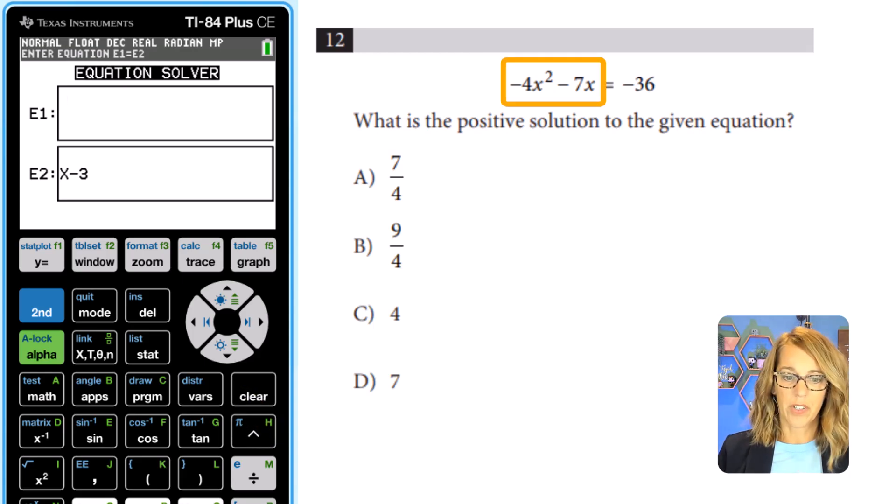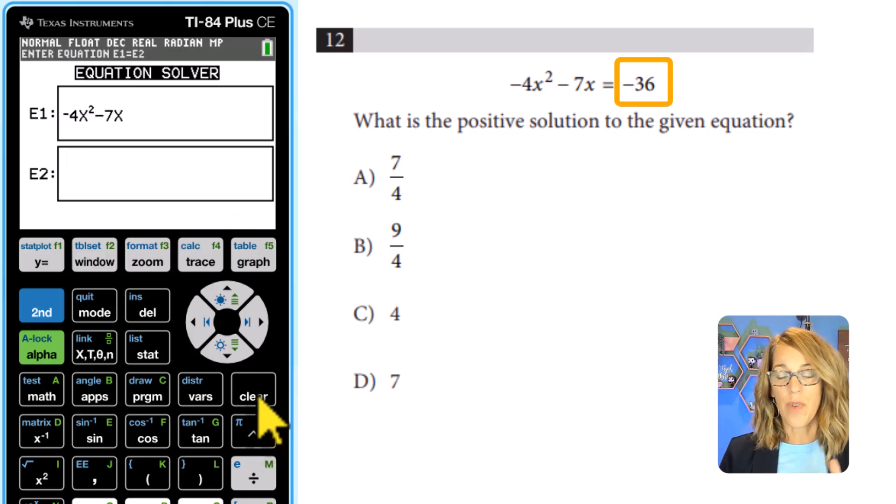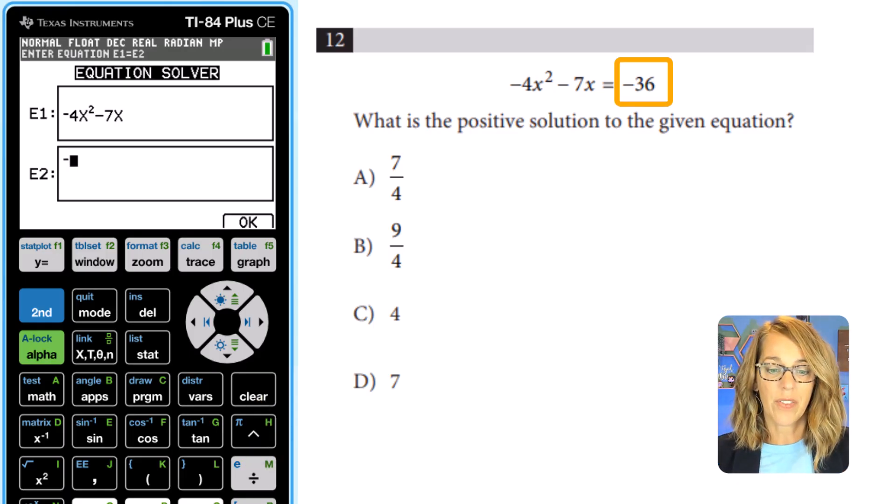So for equation one let me clear what I've got there. We're going to use that negative 4x squared so the little negative at the bottom 4 use your variable key x and then I'm going to use the squared key and then I want minus 7x. That takes care of equation one or the left side. I'm going to arrow down. Let's go ahead and do equation two or the right side. This one is just a negative 36.